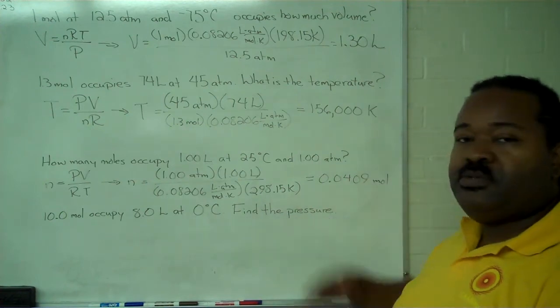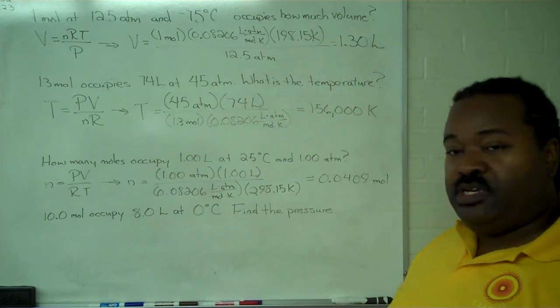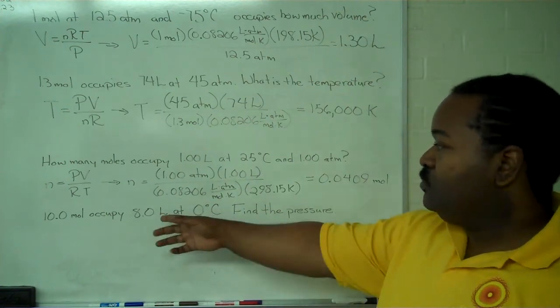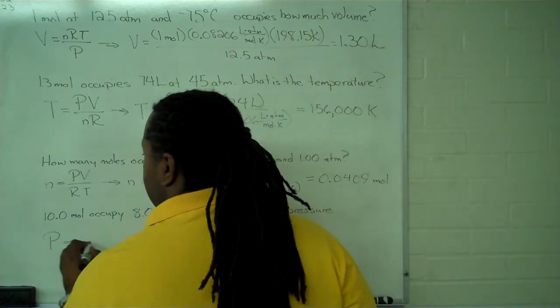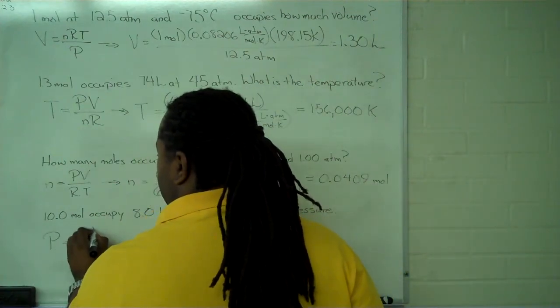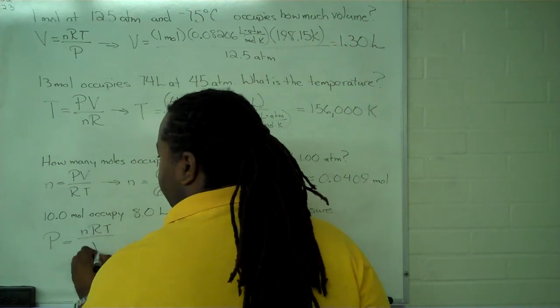So our last example is looking to find the pressure when we're given number of moles, volume occupied, and the temperature. So P equals NRT over V.